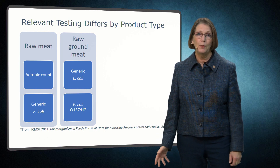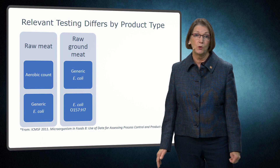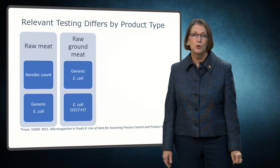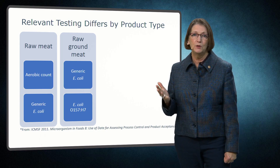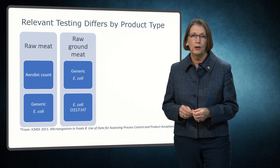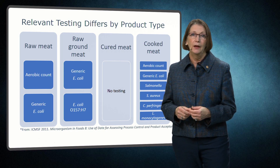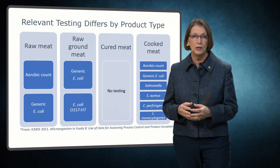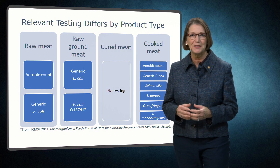For food manufacturers, government entities and receiving customers do not have limitless resources for microbiological testing. Thus, they need to focus resources on the most important tests. ICMSF recommends tests that provide the most useful information to evaluate the microbiological status of a product. For example, aerobic colony counts and generic E. coli were deemed useful for raw meat products. However, for ground meat that is raw, testing shifted to generic E. coli and E. coli O157. Conversely, no routine microbiological testing was recommended for cured meat products, while for cooked meat products, aerobic colony counts, generic E. coli, salmonella, Staphylococcus aureus, Clostridium perfringens, and Listeria monocytogenes were deemed appropriate. This reference also considers considerations that may influence application of these tests.